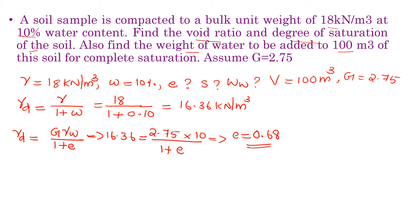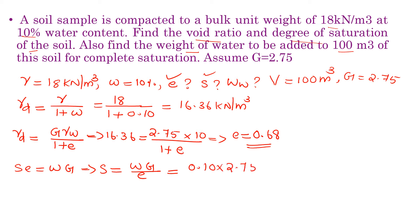Second, we need to find the degree of saturation S. We know the general equation: S times E is equal to W times G, so S is equal to W times G divided by E. Substituting the values: W is 0.10, G is 2.75, E is 0.68. Solving this, we get the value of S as 0.404.